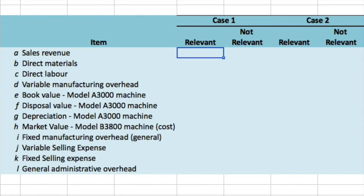The old model A3000 machine is the company's constraint. Management is considering purchasing a new model B3800 machine to use in addition to the A3000. The old A3000 would continue to be used to capacity as before; the new B3800 would be used to expand production. The increase in volume would be large enough to require increases in fixed selling expenses and general administrative overhead, but not in general fixed manufacturing overhead.